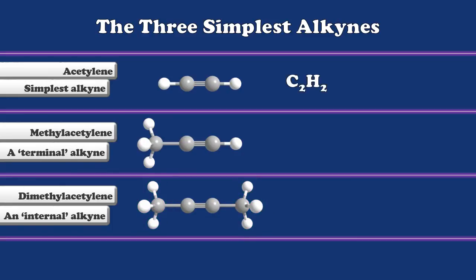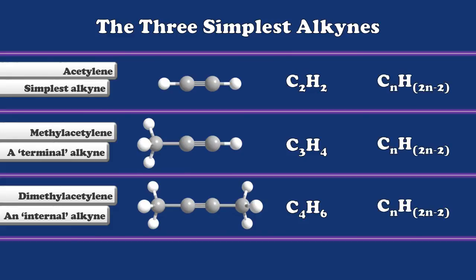Our alkynes have the formulas C2H2, C3H4, and C4H6. They create a pattern which can be modeled as CnH2n minus 2. As we continuously remove hydrogens from our structures, making them less and less saturated, we go from alkanes to alkenes to alkynes.